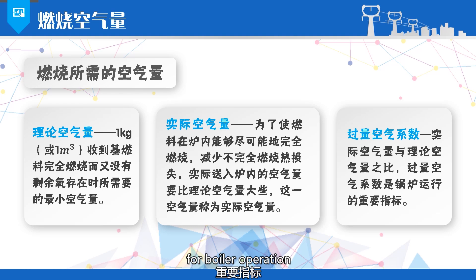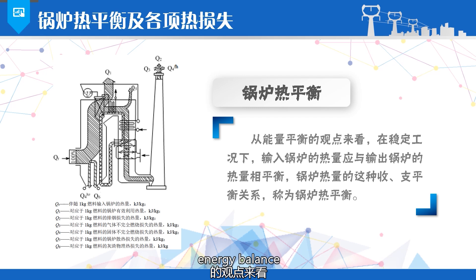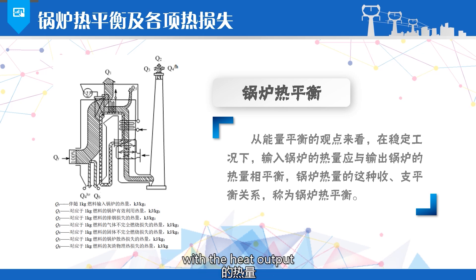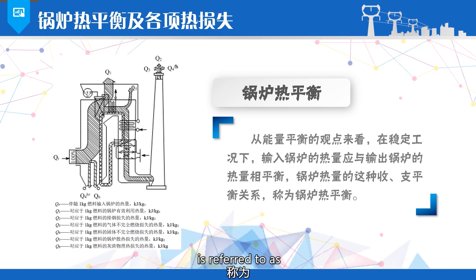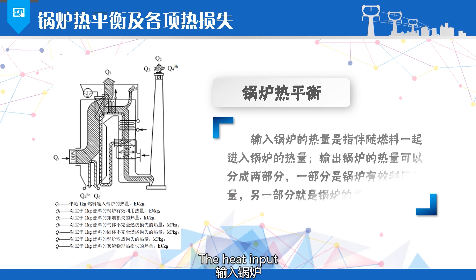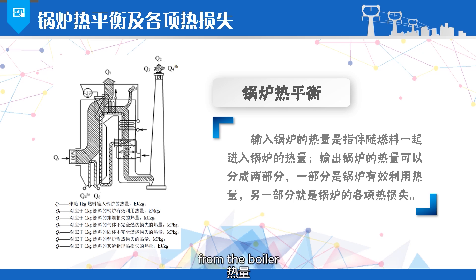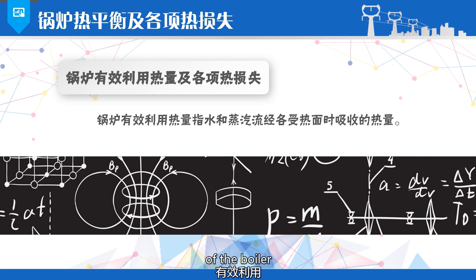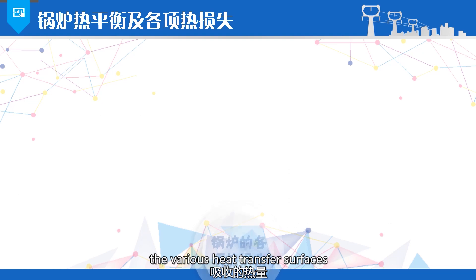The excess air coefficient is an important indicator for boiler operation. From the perspective of energy balance, under steady operating conditions, the heat input into the boiler should be balanced with the heat output from the boiler. This relationship of income and expenditure of heat in the boiler is referred to as the boiler heat balance. The heat input into the boiler refers to the heat that enters the boiler along with the fuel. The heat output from the boiler can be divided into two parts: one part is the effective heat utilization of the boiler, and the other part is the various heat losses of the boiler. The effective heat utilization refers to the heat absorbed by the water and steam as they pass through the various heat transfer surfaces.